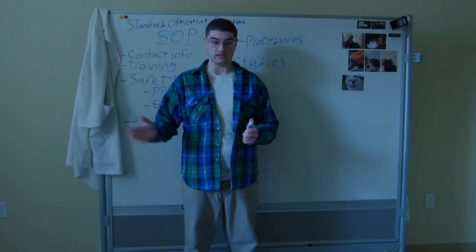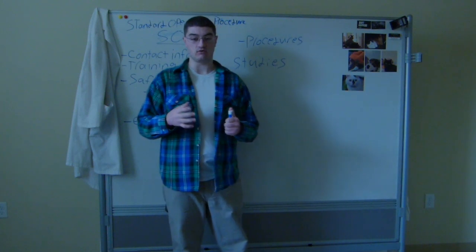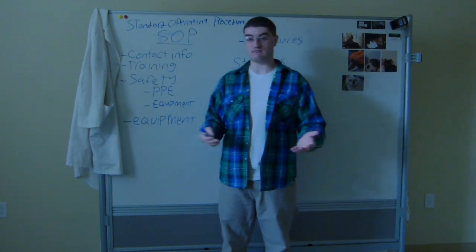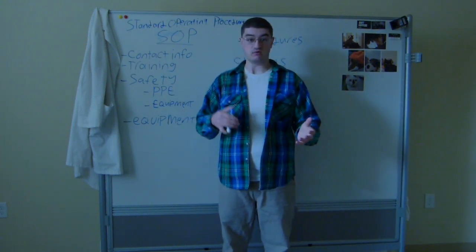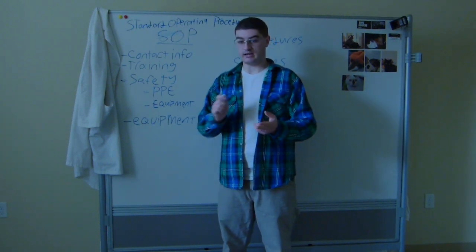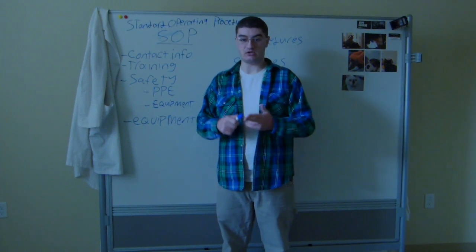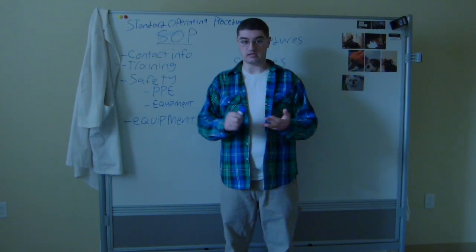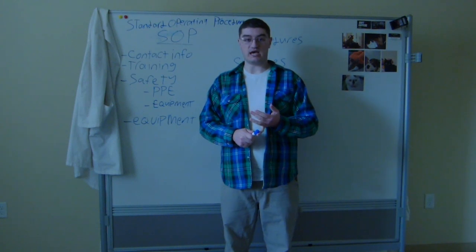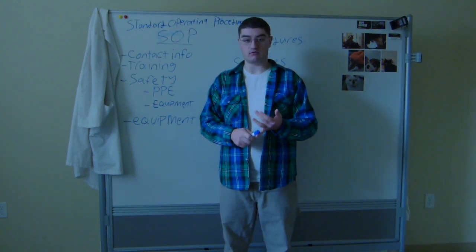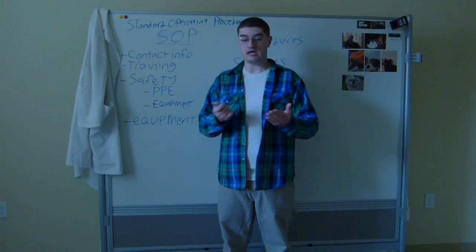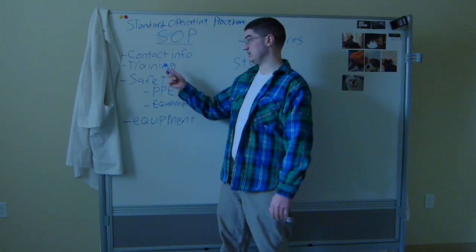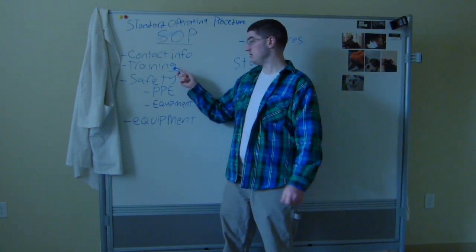All the information you might need to know if you're working in this lab is in the standard operating procedure. The first and most important information is the contact information. Typically there's a list of phone numbers and email addresses for the person in charge of the lab, the lab manager, assistant lab manager, and so on. But also contact information for places like the maintenance department, the veterinary staff, the animal facility, and whatever other contact information you might need — all right there in one place.